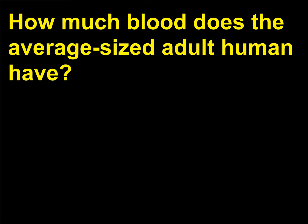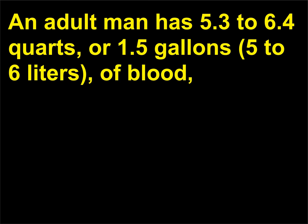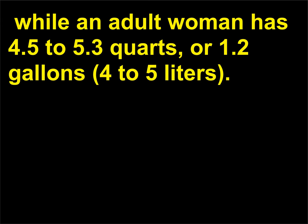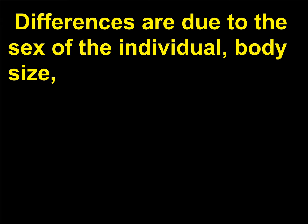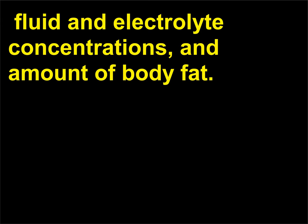How much blood does the average sized adult human have? An adult man has 5.3 to 6.4 quarts, or 1.5 gallons, 5 to 6 liters, of blood. While an adult woman has 4.5 to 5.3 quarts, or 1.2 gallons, 4 to 5 liters. Differences are due to the sex of the individual, body size, fluid and electrolyte concentrations, and amount of body fat.